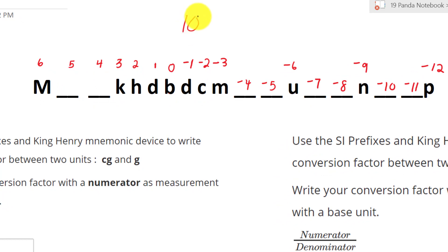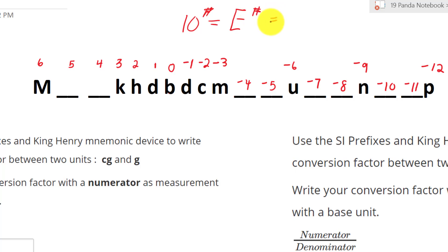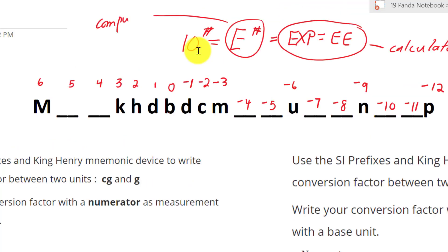When inputting 10 to a power on a computer program, you will represent 10 as a capital E, and then you will have your number. However, on the calculator button, it will always be EXP or EE — and the capital E notation is for the computer.